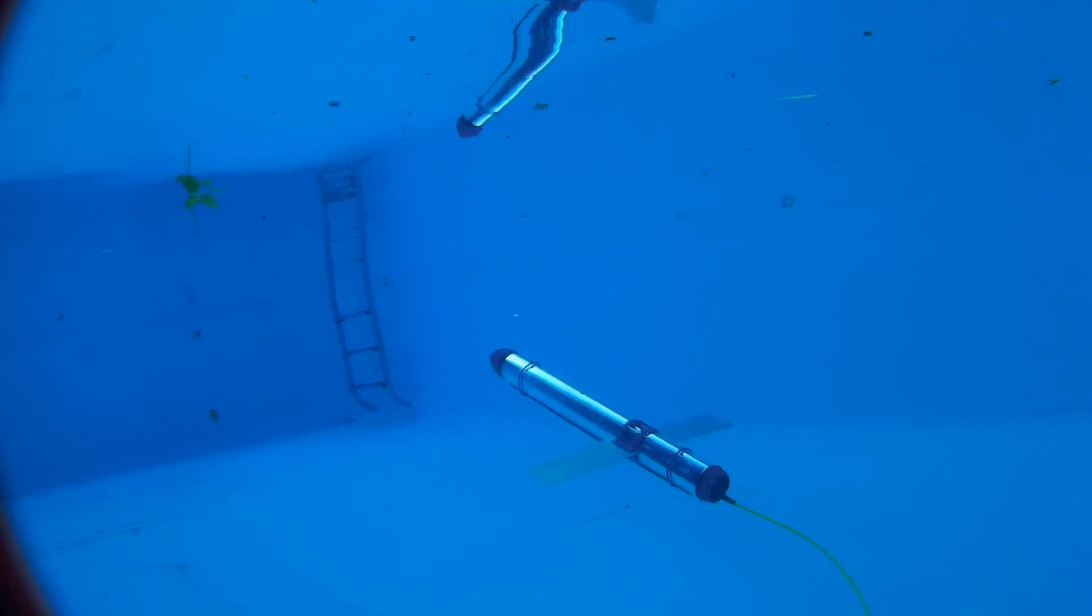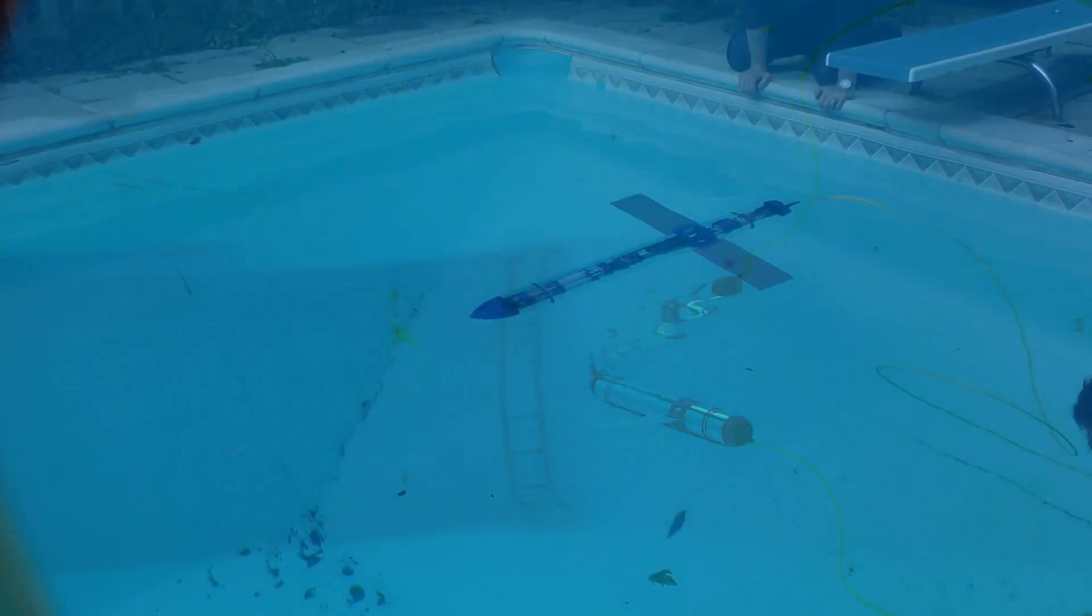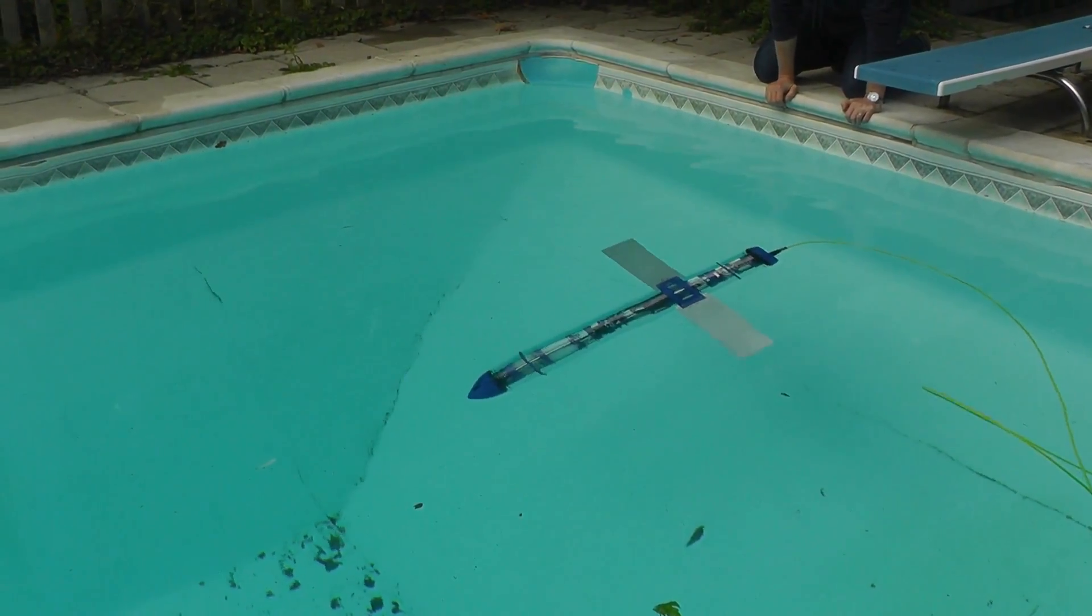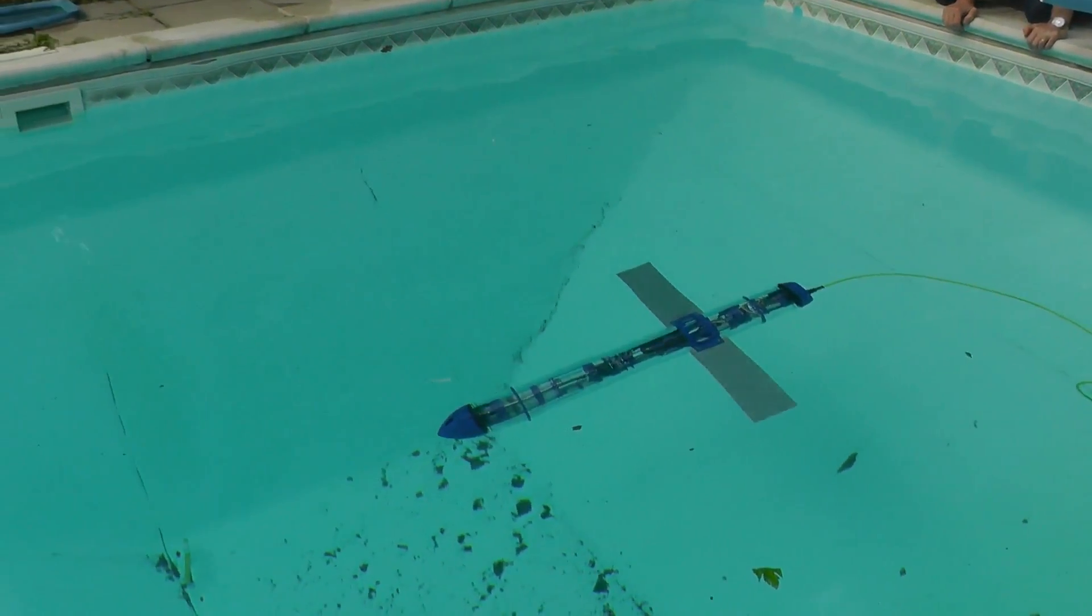In order to dive, the glider uses a buoyancy engine that takes in water, which makes the glider more dense than its surroundings, causing it to descend. The hydrofoils convert this downwards motion into lateral movement, and the inverse occurs while the glider is ascending.